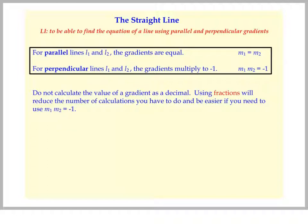Let me show you why. For example, let's say m1 equals 3 over 5. What we do to get the second gradient is we invert that fraction and change the sign. So that will become minus 5 over 3.